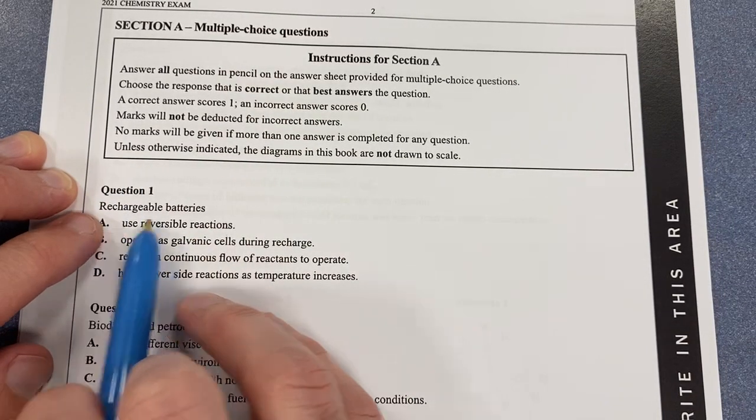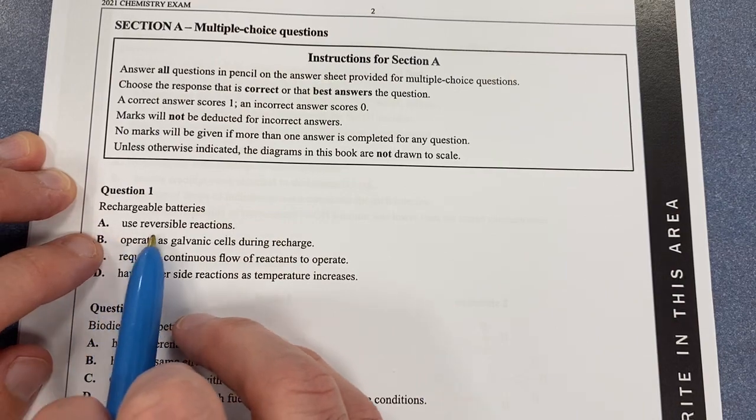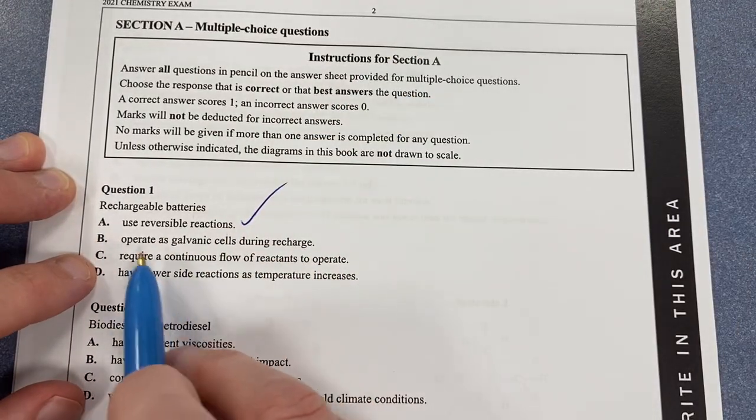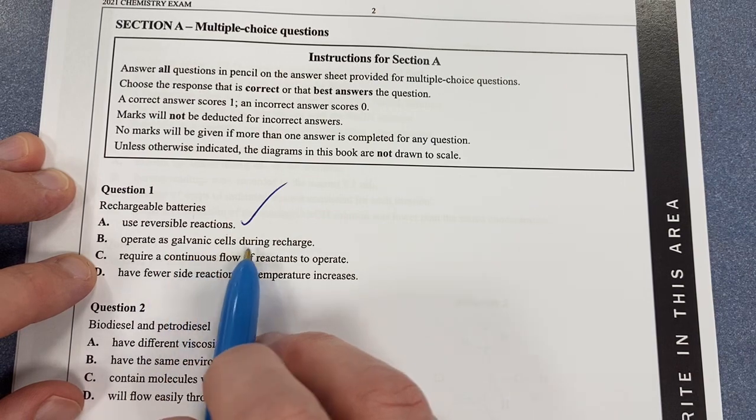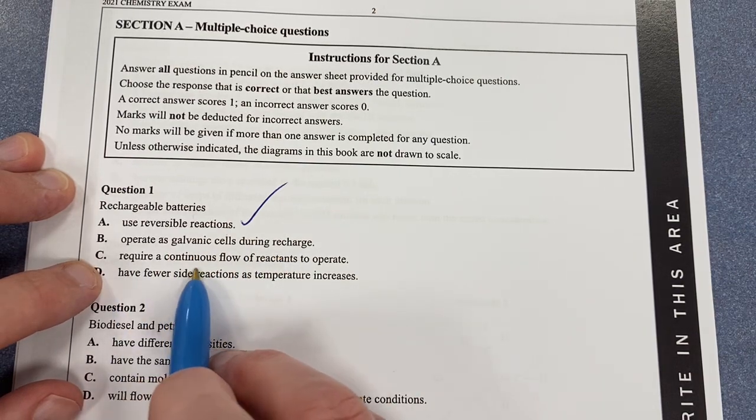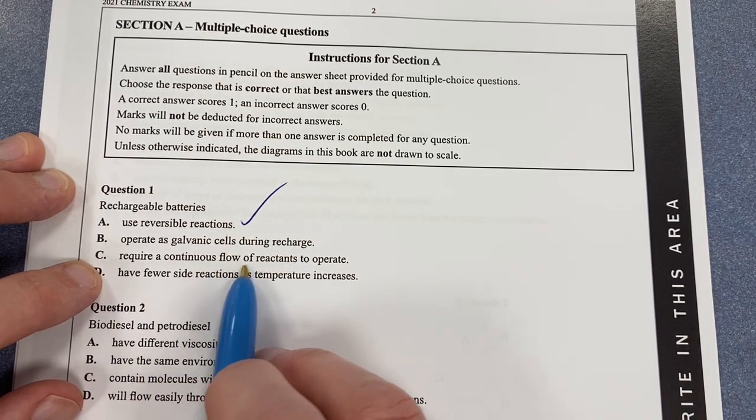Question one, rechargeable batteries. Option A, use reverse reaction. That is correct. Let's just make sure the other ones are wrong. Operate as galvanic cells during recharge - no. Require continuous flow - no, that is a fuel cell.